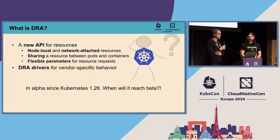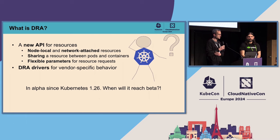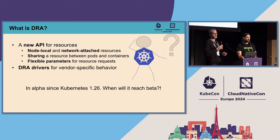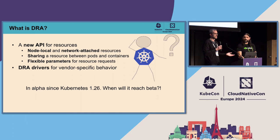Let's talk about what DRA does and how it's designed. It started as an attempt to overcome the limitations of the device plugin interface. It took inspiration from volume management in Kubernetes — this new API is very similar. We have a resource class that can be created by an administrator. Users create resource claims. These resource claims get matched to specific hardware. And then in a pod and in a container, we reference this resource instance to give a container access to that allocated hardware.